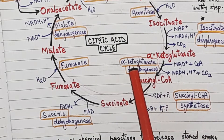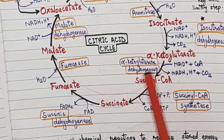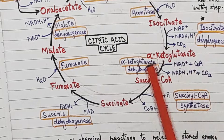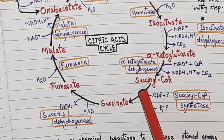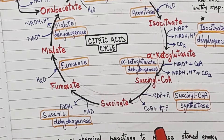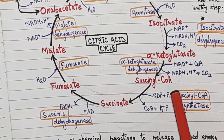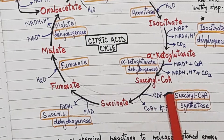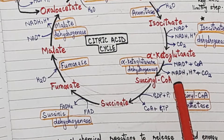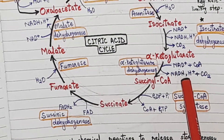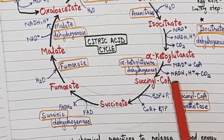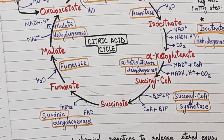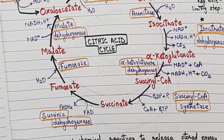Alpha-ketoglutarate is converted into succinyl CoA by the enzyme alpha-ketoglutarate dehydrogenase. In this reaction, CoA is used, NADH is produced, and carbon dioxide is liberated. So again we have an energy product NADH and a CO₂ release.